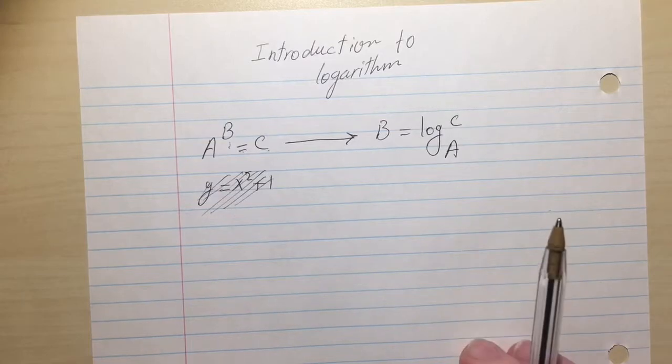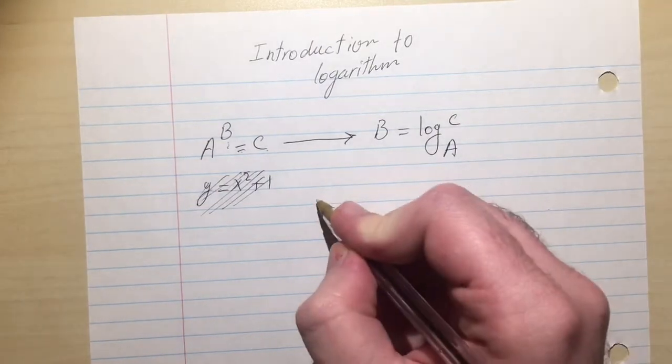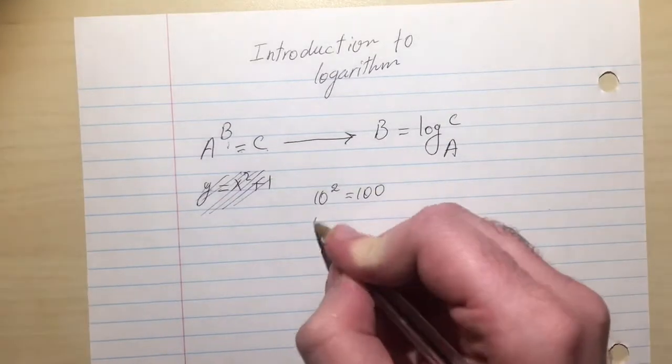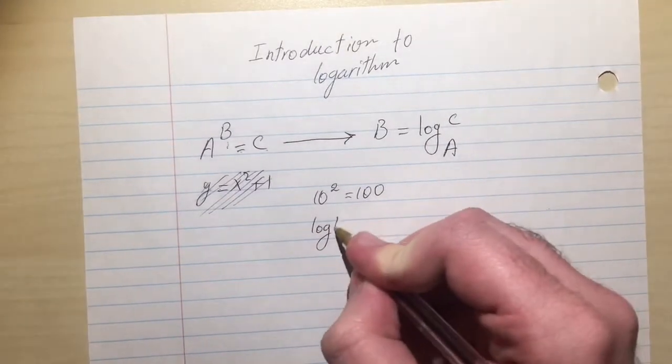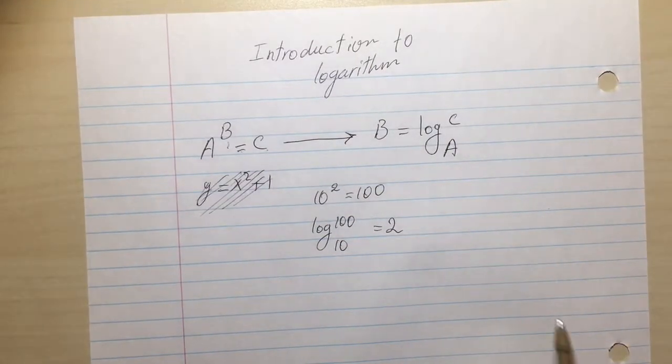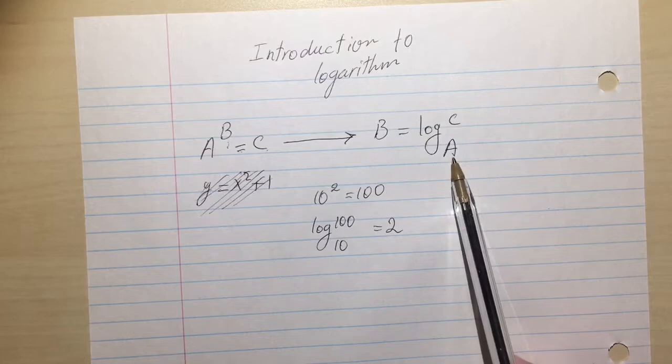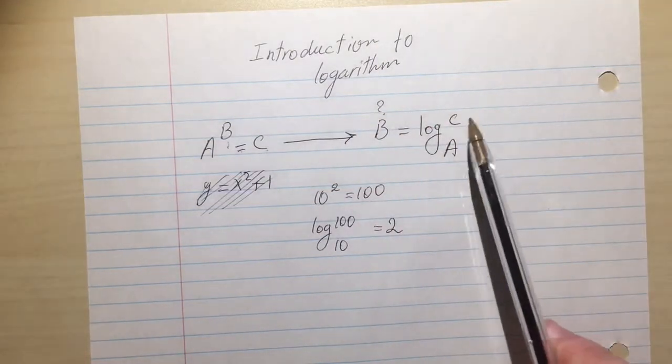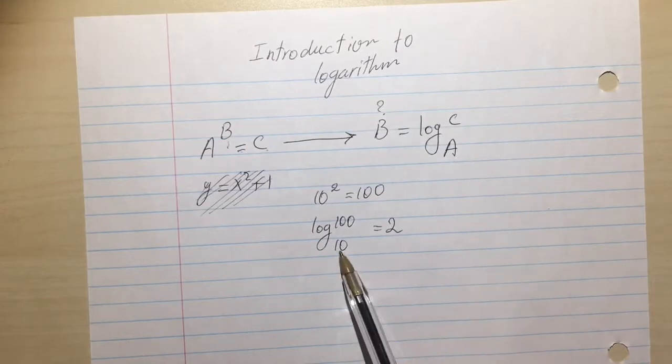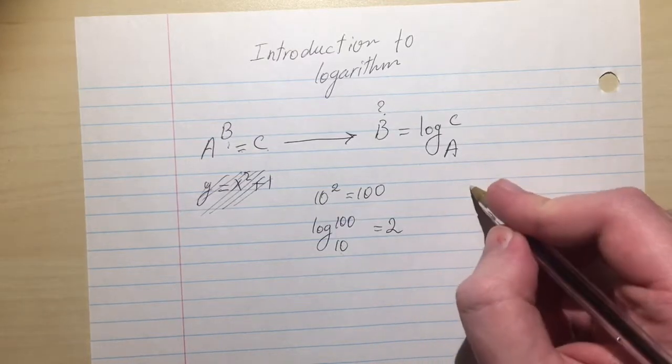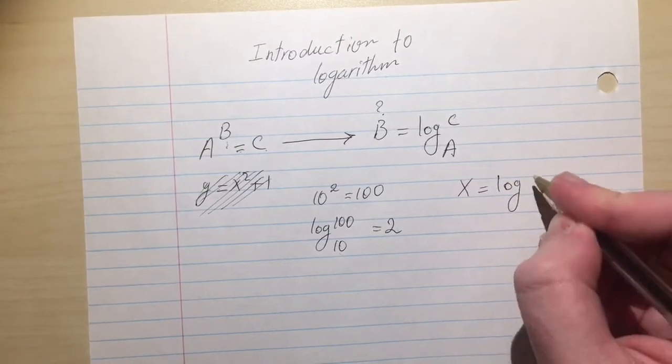For example, we know 10 to the 2 is 100, right? Log of 100 base 10 is 2. Another way of saying or reading the log notation is A to what exponent makes it C. 10 to 2 makes it 100.